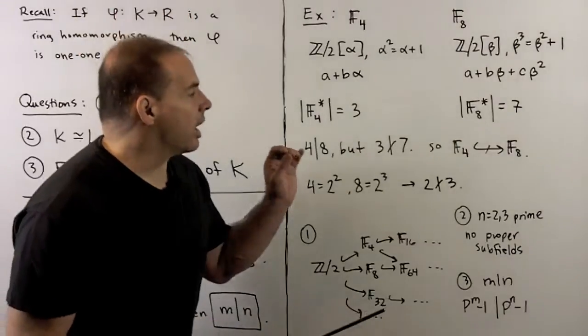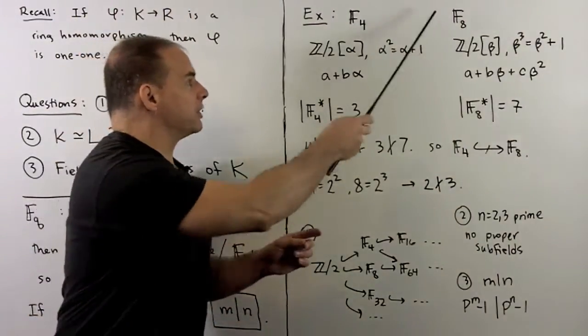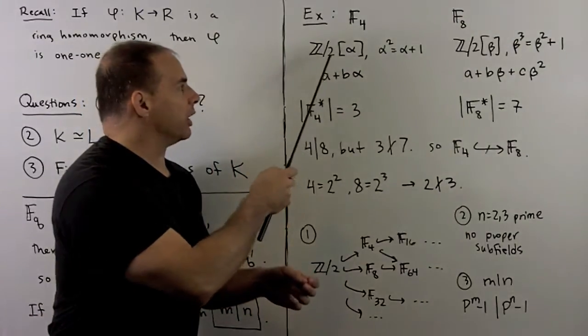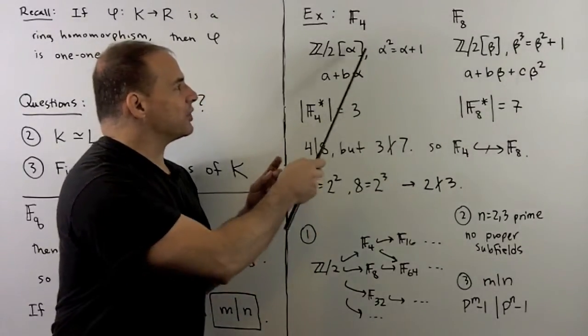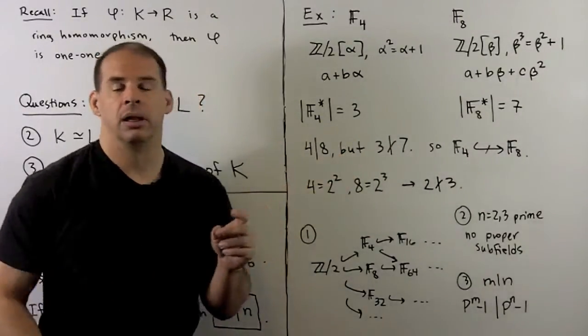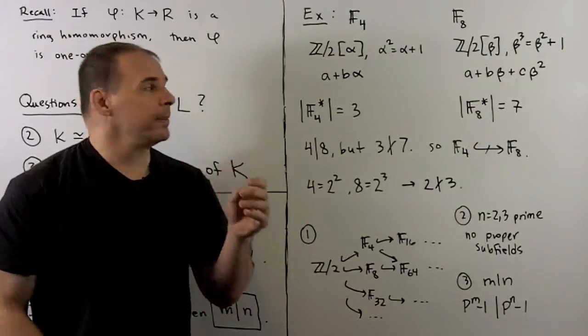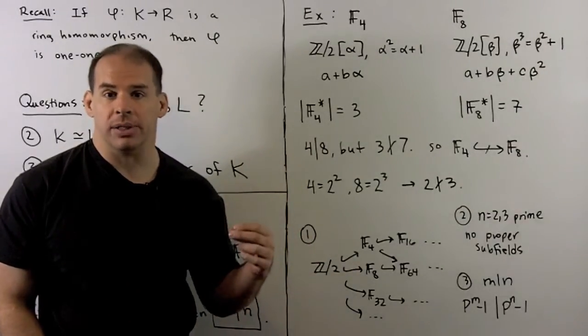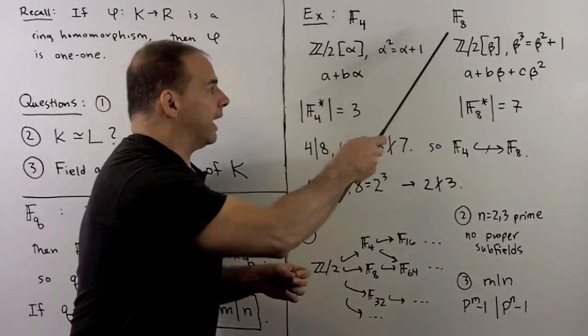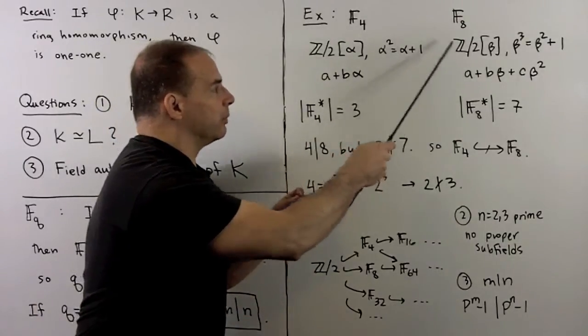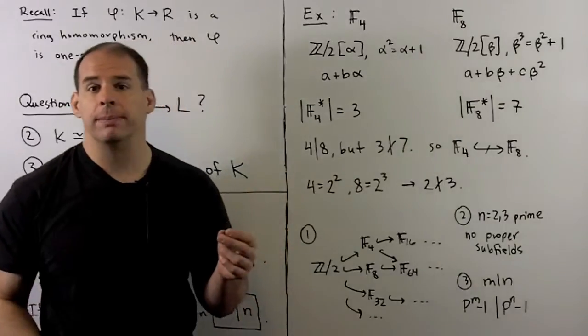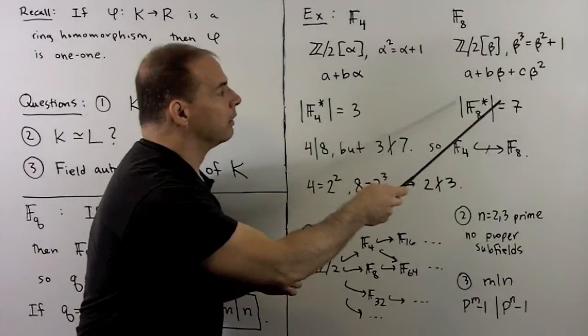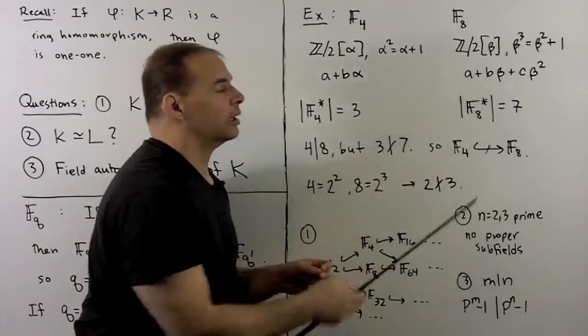Now, let's look at a concrete example. So I'll take F_4 and F_8. For F_4, our construction was, we take Z mod 2, I'll join an element alpha. Alpha satisfies the relation alpha squared equals alpha plus 1. Note, we can always reduce powers of alpha to get something in the form a plus b alpha. Alpha, a and b are in Z mod 2, so four elements. For F_8, we use Z mod 2, adjoint beta, where beta cubed equals beta squared plus 1. Again, we can always reduce powers to get down to a plus b beta plus c beta squared. So here we have eight elements.